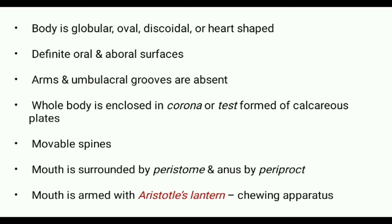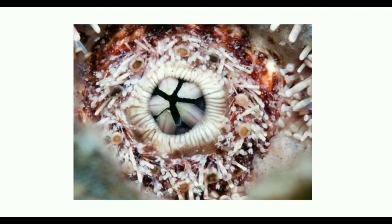Their whole body is covered by movable spines. The mouth is surrounded by a leathery membrane called the peristome, and the anus is surrounded by a membrane called the periproct. They contain a masticatory or chewing apparatus in the mouth called Aristotle's lantern.